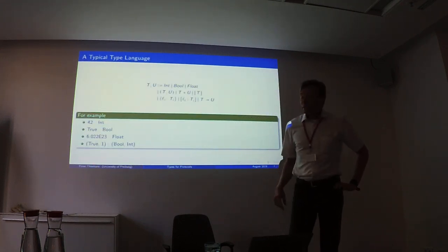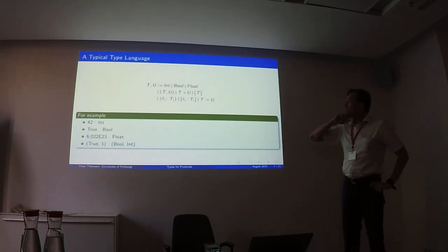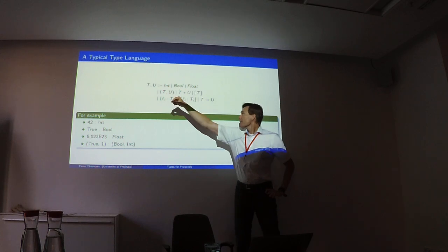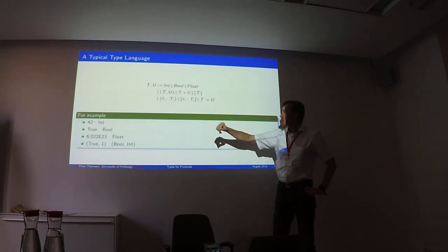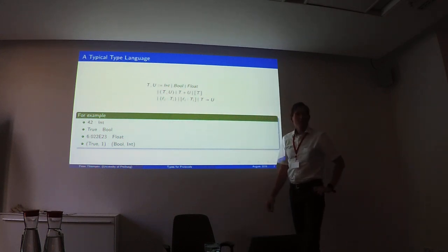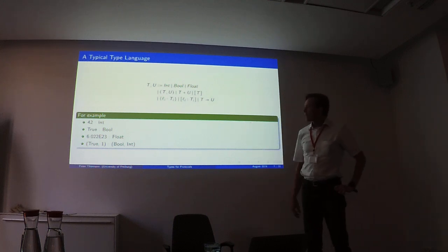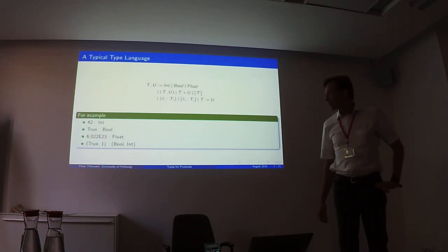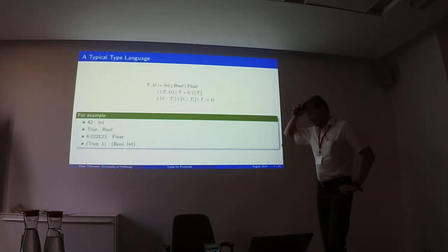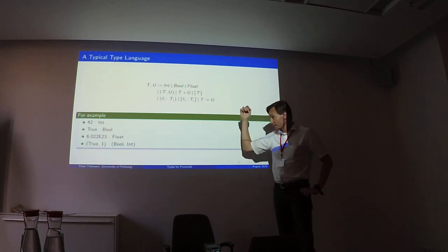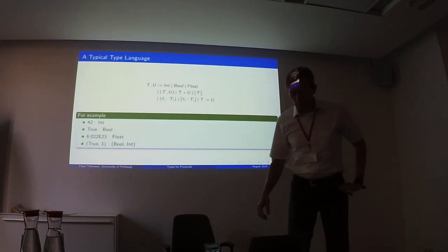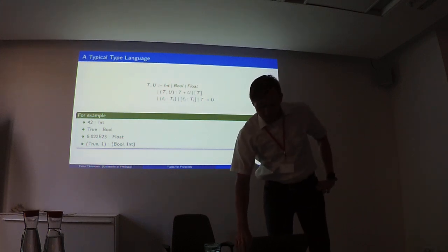Typically you have types like int and bool, pair types, list types, maybe record types, variant types, and function types. Then you have a type system that says: 42 is an int, true is a bool, some floating point constant is a float, or a pair (two, one) has type bool cross int.